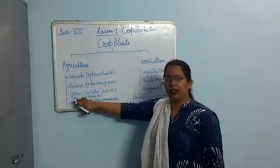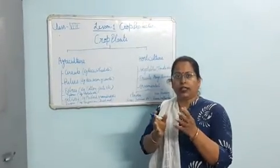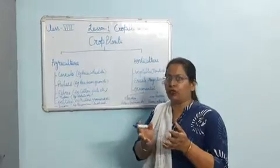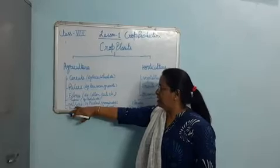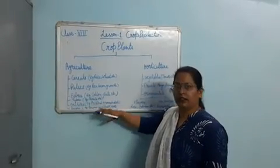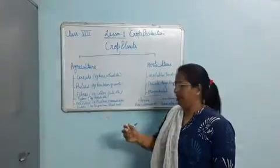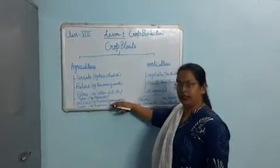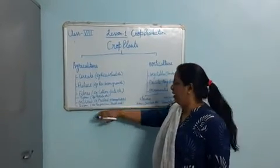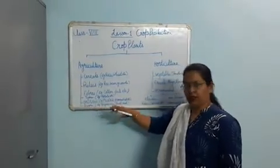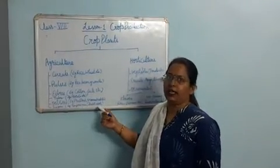Next is tuber. Tubers are the underground stem. There are certain plants like potato — these are underground stems that store food, so they come in the category of tubers. Then there are oil seed crops. As the name suggests, oil is obtained from the seeds of the plant, like mustard and groundnut — these are plants that give us oil. Lastly, sugar crops: to obtain sugar from plants, sugarcane and beetroot are cultivated.